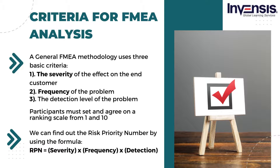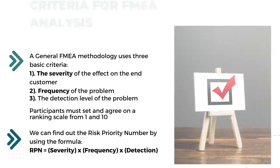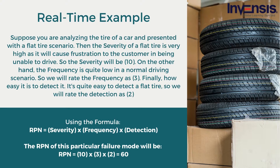Once ratings have been given for each failure mode, we can find out the risk priority number, or RPN. The RPN formula is: RPN equals severity multiplied by frequency multiplied by detection. For example, suppose you are analyzing the tire of a car and presented with a flat tire scenario. The severity of a flat tire is very high, as it will cause frustration to the customer in being unable to drive, so the severity will be 10. The frequency is quite low in a normal driving scenario, so we rate frequency as 3. It's quite easy to detect a flat tire, so we rate detection as 2. Therefore, the RPN equals 10 multiplied by 3 multiplied by 2, which equals 60.